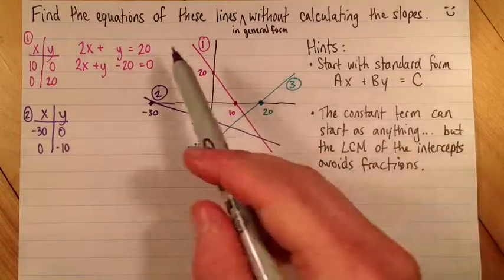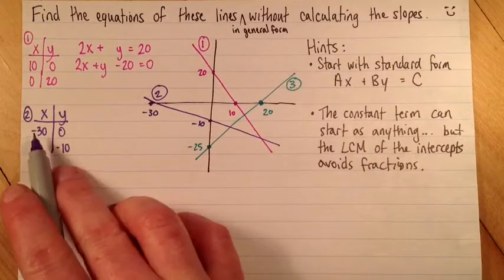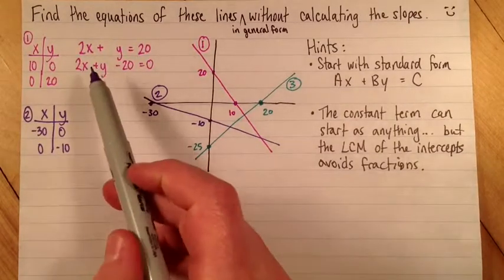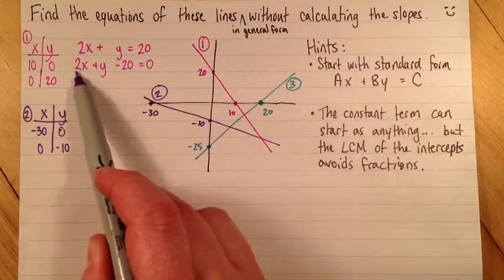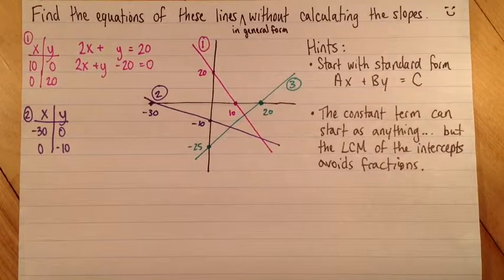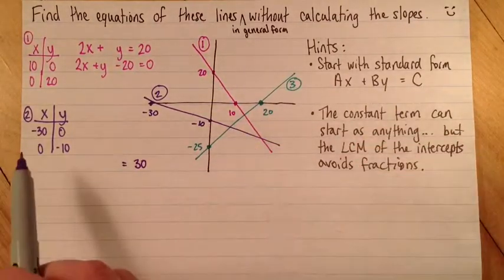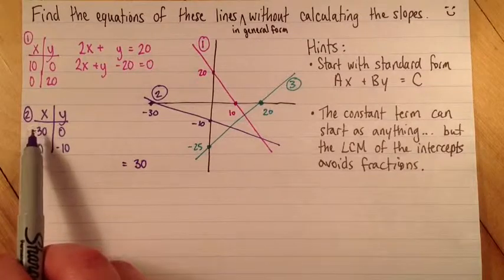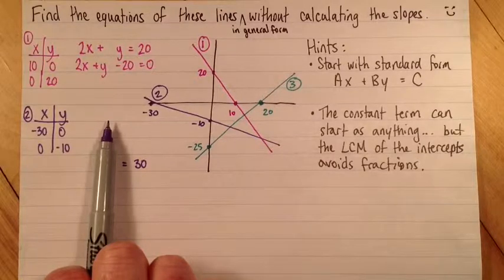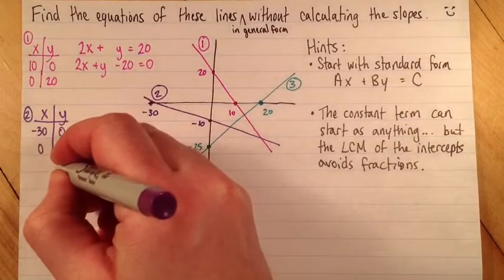For my c term, or my constant term, I'm going to start with the lowest common multiple of these. You can start with the negative or positive, we might have to adjust the signs. I kind of got lucky here, and my coefficient of x was positive, so I didn't have to do anything with the signs. I'll start with equals 30. If my y value is 0, it doesn't matter what that y term is. How many x's do I need to get 30? Because my x is negative 30, I need negative 1x.